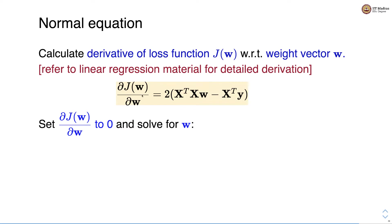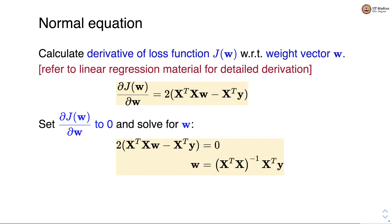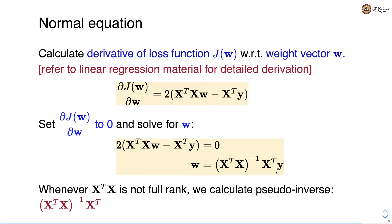In the normal equation approach, we set this derivative to 0 and solve for W. Through algebraic manipulation we get W equals (X transpose X) inverse X transpose Y. Whenever X transpose X is not a full rank matrix, we calculate the pseudo-inverse, which is (X transpose X) inverse X transpose, in order to obtain the weight vector that results in the minimum least square error. This becomes the weight vector used in our model.